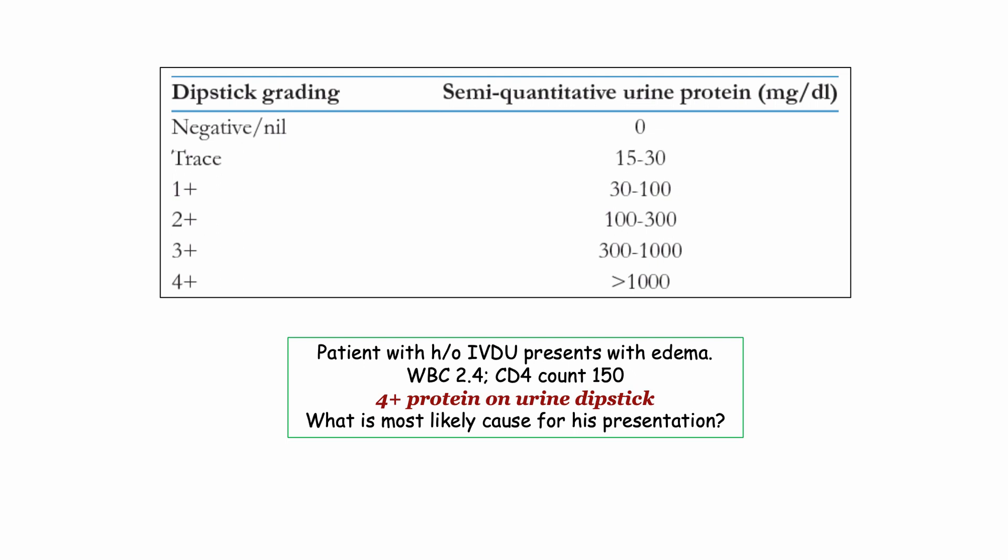Insofar as urine dipstick and quantifying protein, 4-plus protein is not synonymous with 3.5 grams, but as an extreme measure you will see them used interchangeably. More importantly, any other dipstick measures such as 1 or 2-plus proteinuria imply mild proteinuria and should not be construed as nephrotic syndrome. This is a common distractor question writers will use in the nephritic disorders.